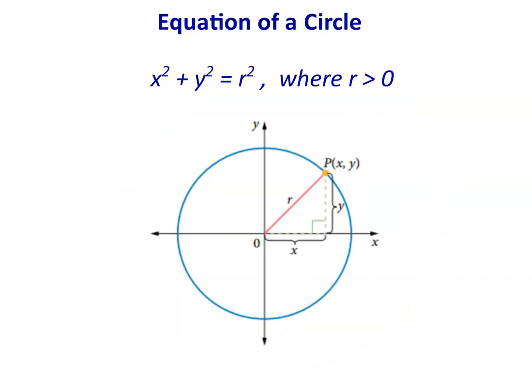Okay, here's the equation of a circle. A bit different from the other equations we've looked at. x squared plus y squared equals r squared. And because r is the radius, r has to be positive.